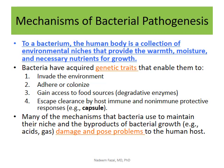Bacteria have developed a system to escape our host immune and non-immune protective responses. Whatever is good for bacteria is bad for us. In their metabolic pathway they produce acids and gases, which can cause damage to our tissues. When these factors get out of control and cause damage, we call them virulence factors, and we call those bacteria virulent or pathogenic.